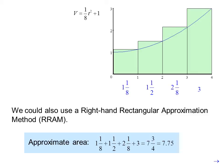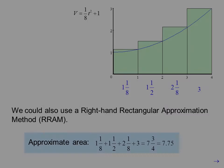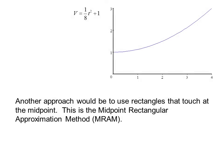There is something else we could try. Another approach would be to use rectangles that touch at the midpoint. This is the Midpoint Rectangular Approximation Method, or MRAM. So we choose values of T at the middle of each rectangle.